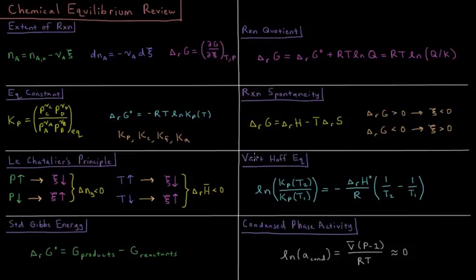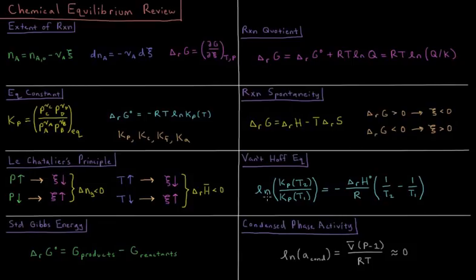We can see how the equilibrium constant changes as a function of temperature by looking at the van't Hoff equation, where there is a proportional relationship between the log of the equilibrium constant and the inverse of the temperature, with the proportionality constant being the negative enthalpy of reaction divided by the gas constant.